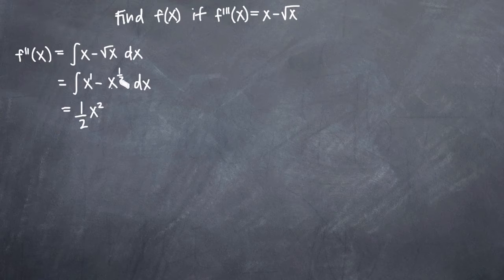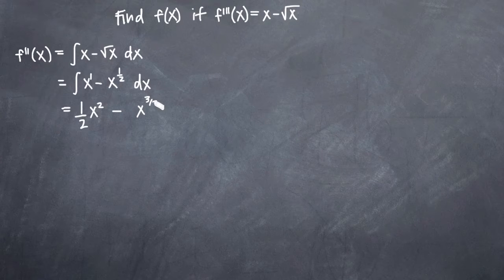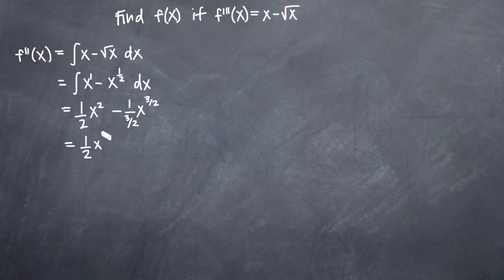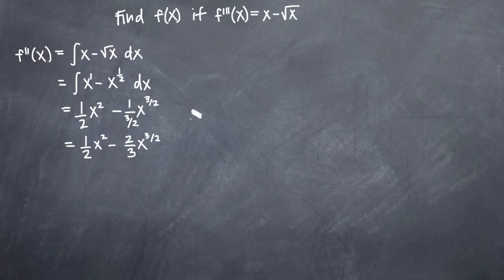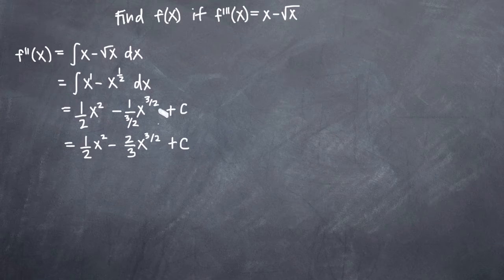Now we take the integral of negative x to the 1/2. We add 1 to the exponent: 1/2 plus 1 gives us x to the 3/2, and then divide the coefficient 1 by the new exponent 3/2. When we simplify, we get 1/2 x squared minus 2/3 x to the 3/2. And whenever we take an integral, we always add c, the constant of integration. So we add c here, and that gives us the second derivative of f of x.